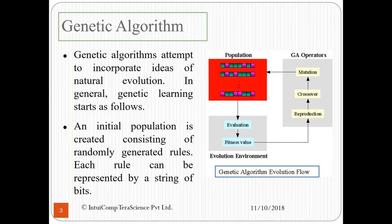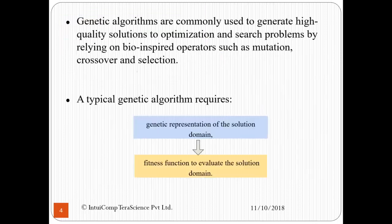An initial population is created consisting of randomly generated rules. Each rule can be represented by a string of bits. Genetic algorithms are commonly used to generate high-quality solutions to optimization and search problems by relying on biologically inspired operators such as mutation, crossover, and selection.